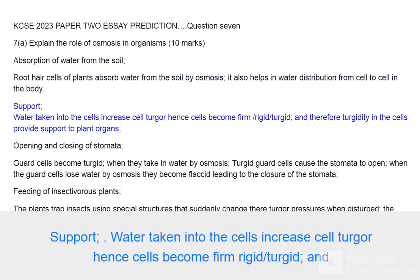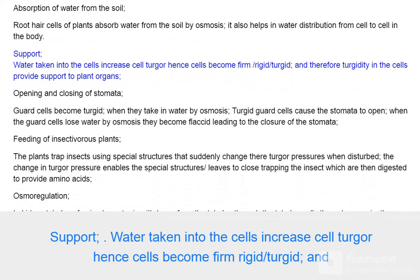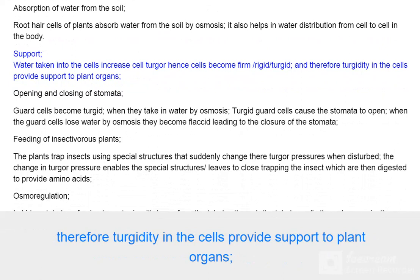Support: Water taken into the cells increases cell turgor, hence cells become firm, rigid, or turgid. Therefore, turgidity in the cells provides support to plant organs.